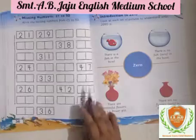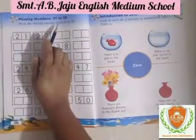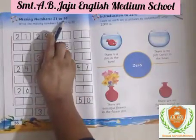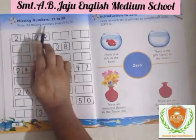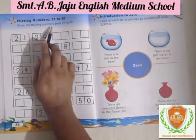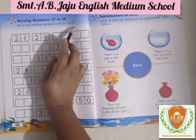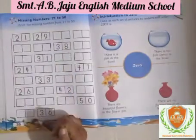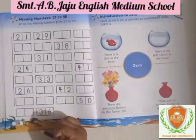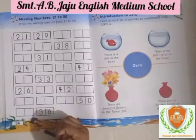Now what we have to do here — missing numbers 21 to 50. Write the missing numbers from 21 to 50. These are the missing numbers we have to write down here.